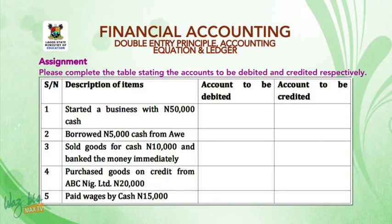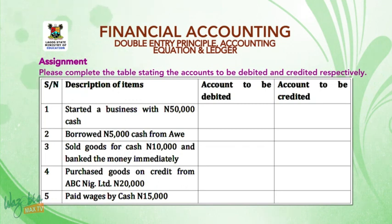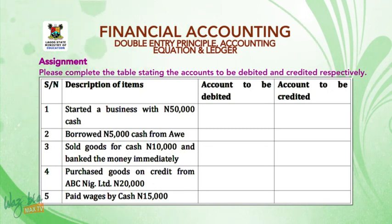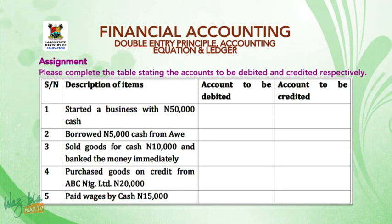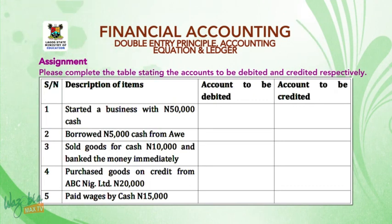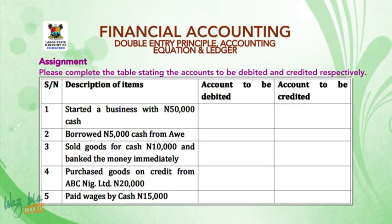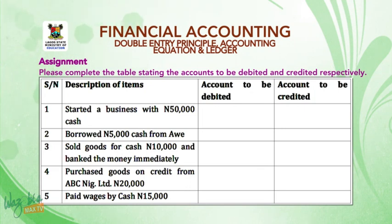At this point I am going to give you an assignment. Please complete the table stating the accounts to be debited and credited respectively. Number one, started the business with 50,000 Naira cash. Number two, borrowed 5,000 Naira cash from Awe. Number three, sold goods for cash 10,000 Naira and banked the money immediately. Number four, purchased goods on credit from ABC Nigeria Limited, 20,000 Naira. Number five, paid wages by cash, 15,000 Naira. State the account to be debited and the account to be credited for each.